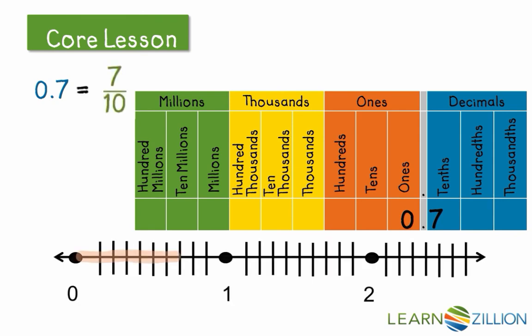So 7 parts are shaded, that becomes our numerator. And out of 10 parts, or total number of parts, is our denominator, or 10.